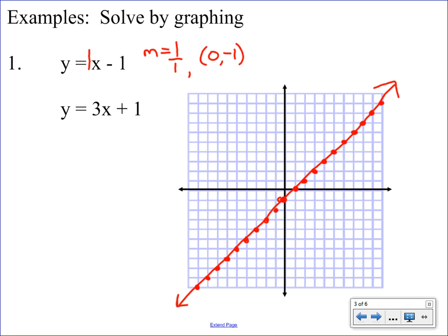Okay, so our first line is done. Our second line we are going to do the same thing. We're going to identify the slope and the y-intercept. Our slope is three, which you can write as three over one, and our y-intercept is zero one.